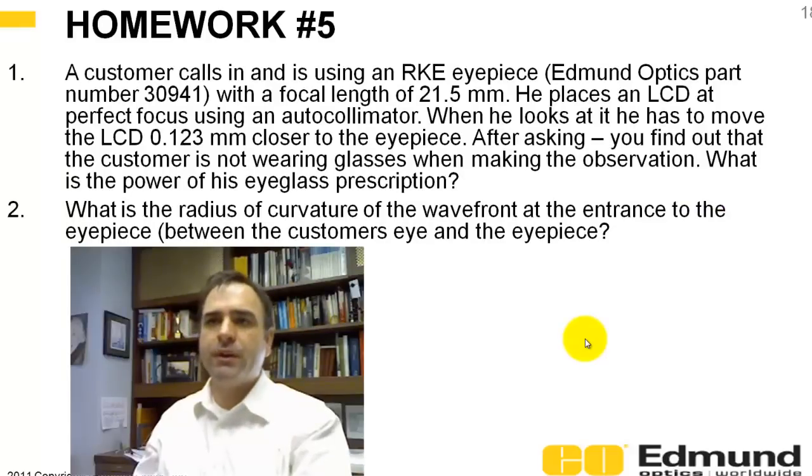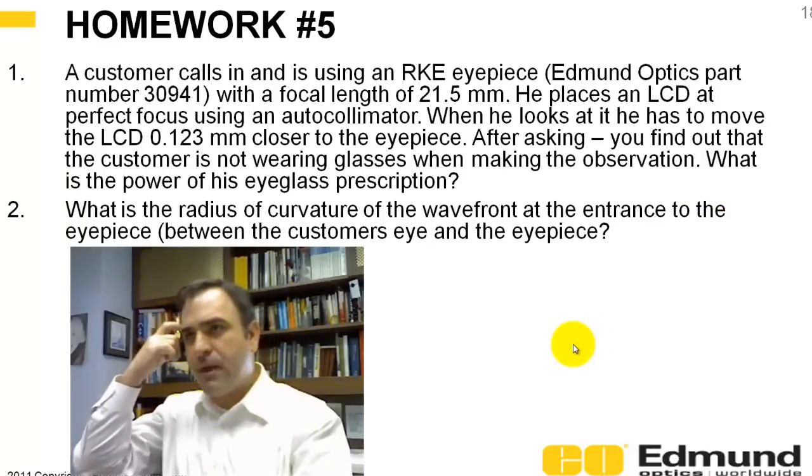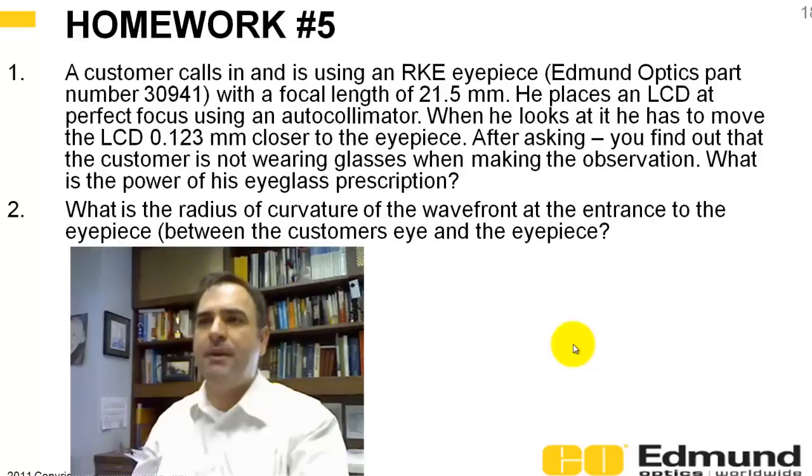Here's the homework. We're going to use an off-the-shelf eyepiece from Edmund Optics, an RKE eyepiece with a focal length of 21.5 millimeters. Your customer's calling and saying that it appears that the object is out of focus, and you find out he's not wearing his glasses. And based on how much he's having to refocus, you can estimate his eyeglass prescription. And then I want you to find out what the wavefront, the radius of the wavefront of his eye, of his faulty eye is.